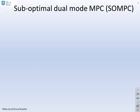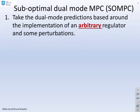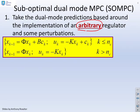Let's start then by looking at SOMPC, which is a suboptimal dual-mode predictive control algorithm. What we're doing is we're taking the dual-mode predictions based around the implementation. And the key thing here is an arbitrary regulator and some perturbations.